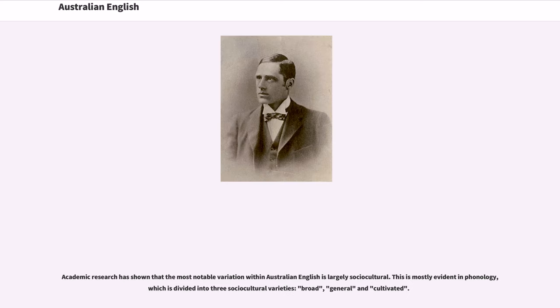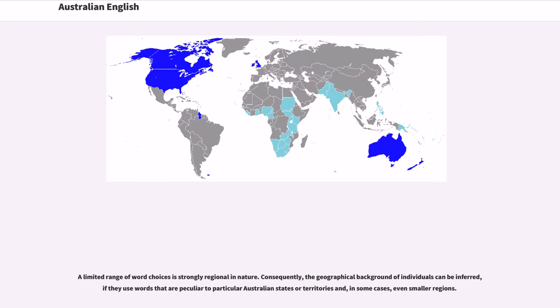Academic research has shown that the most notable variation within Australian English is largely socio-cultural. This is mostly evident in phonology, which is divided into three socio-cultural varieties: broad, general and cultivated. A limited range of word choices is strongly regional in nature. Consequently, the geographical background of individuals can be inferred if they use words that are peculiar to particular Australian states or territories and, in some cases, even smaller regions.